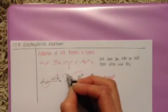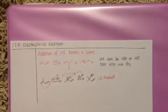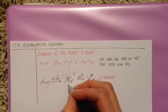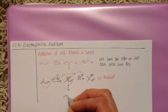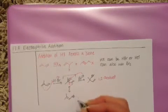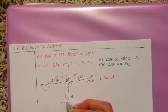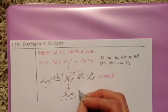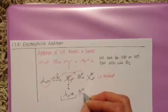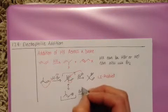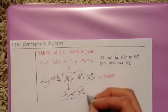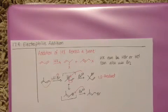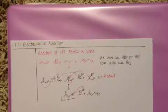Now the carbocation intermediate here does have a resonant structure. We can take that double bond and move it over there like that. Put a positive charge in a different spot. It's not as stable, but any resonance is good. And this particular carbocation could also be attacked by the bromide. And that gives us our other product, the one that's not quite so easy to predict.